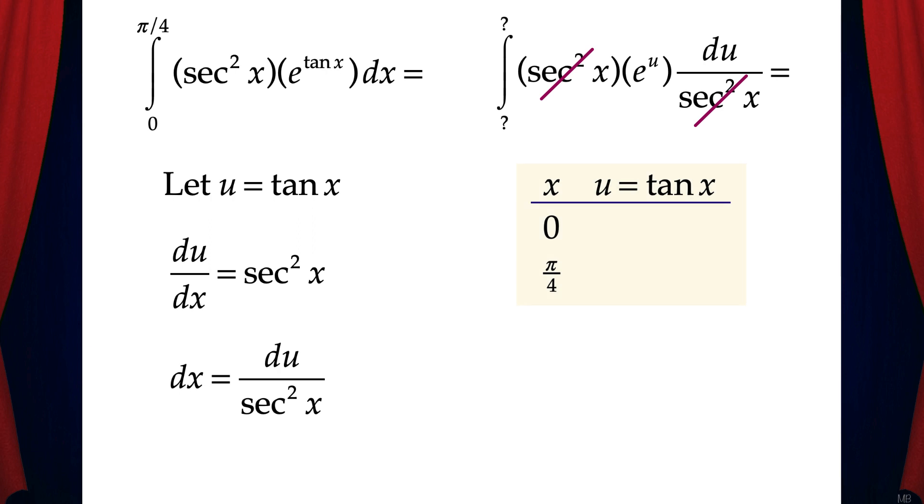We'll make an x u chart. Here I have x and u equals tangent x. I've placed 0 and pi over 4 in the x column. And now we just need to solve for u. When x equals 0, u equals tan 0, which equals 0. And when x equals pi over 4, u equals tangent pi over 4, which equals 1.